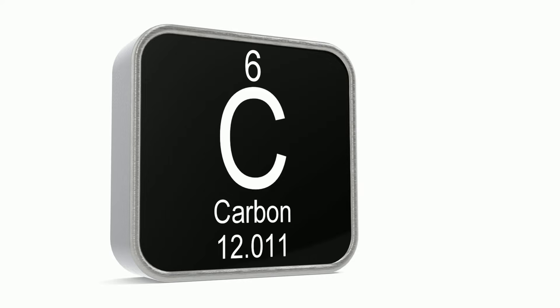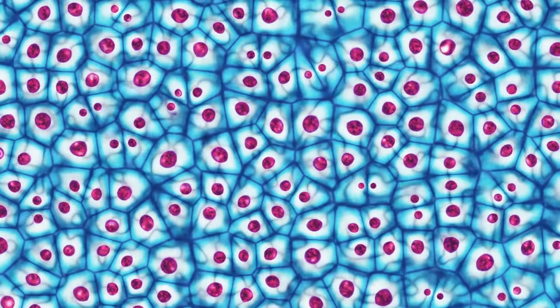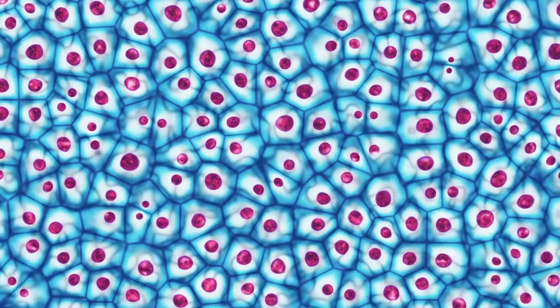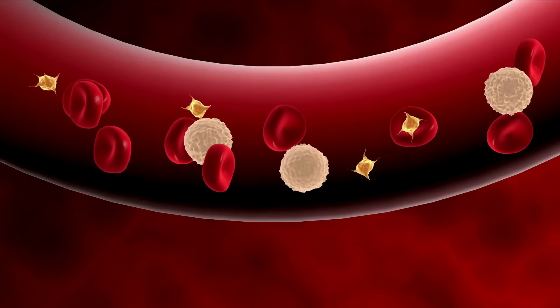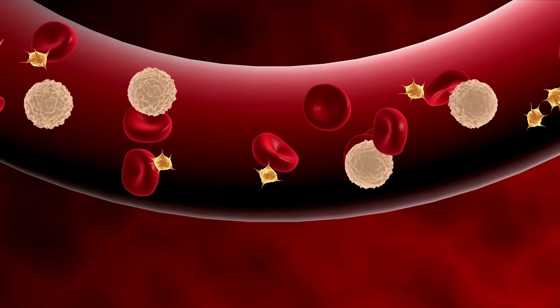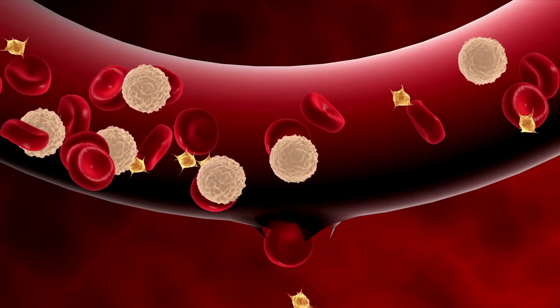Carbon is found in all organic macromolecules — it's a building block of life, because virtually all molecules in the body contain carbon. Hydrogen is an element present in all the fluids of the human body, which allows toxins and waste to be transported and eliminated. It is also a building block of water, which is essential for life.